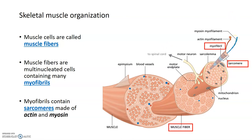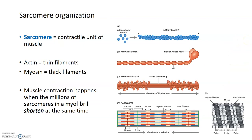We're going to look more specifically at a sarcomere and its organization. A sarcomere is the contractile unit of muscle and it's made up of two types of filaments: actin, or thin filaments, and myosin, or thick filaments.